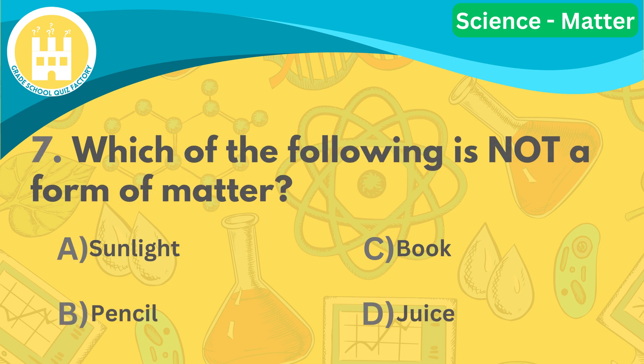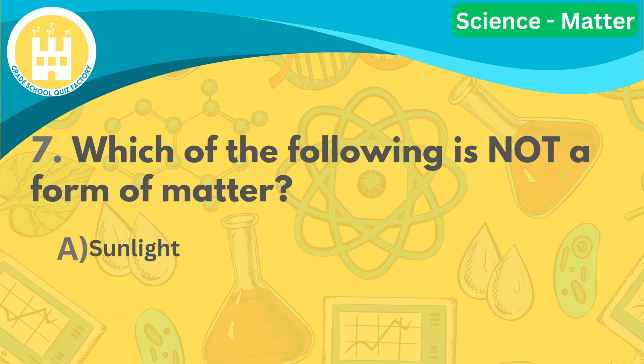Number seven, which of the following is not a form of matter? The correct answer is letter A, sunlight. Sunlight is a form of light energy, not matter.